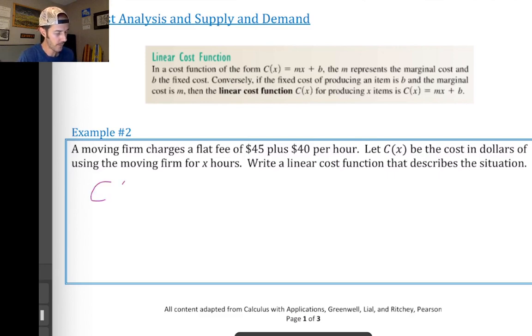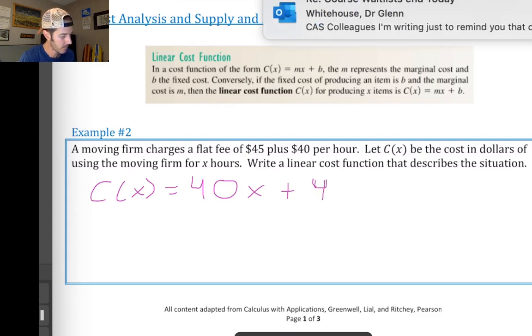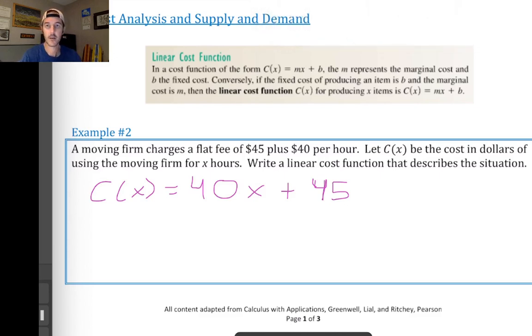We have c of x, our cost function, and that's equal to, now we need our marginal cost, m, and we're going to multiply that by the number of hours that someone might hire the firm for. So, at $40 per hour, that's going to be our marginal cost. We'll multiply that by the number of hours. And then we have to add the flat fee that comes along with hiring this firm, which is $45. And that's it. That is your cost function.